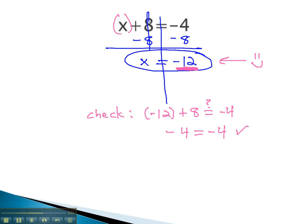Negative 12 is the solution, the only solution, that will make the original equation x plus 8 equals negative 4 a true equation. Let's try one more problem.